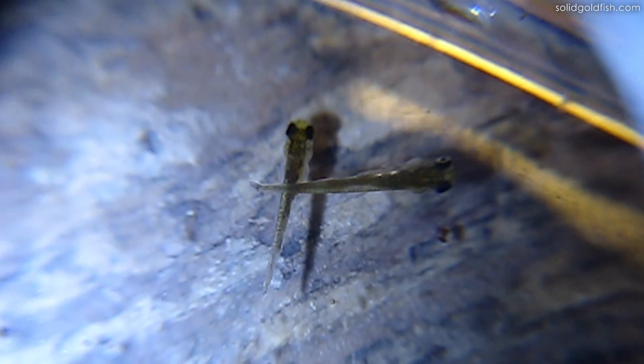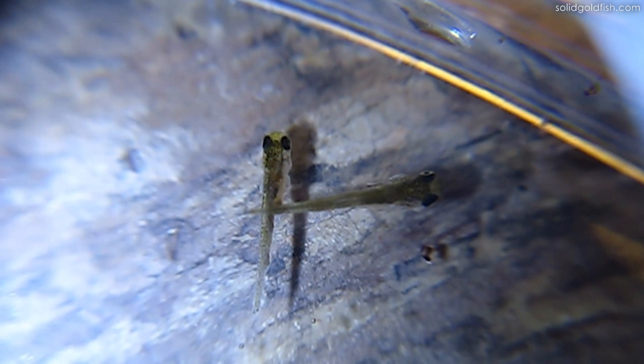Hi guys, welcome back to Solid Gold. Now as you may know, many types of baby fish, including goldfish, grow best on a diet of live baby brine shrimp. Baby fish, also called fry, eat baby brine shrimp readily because the movements of the shrimp entice them to eat.